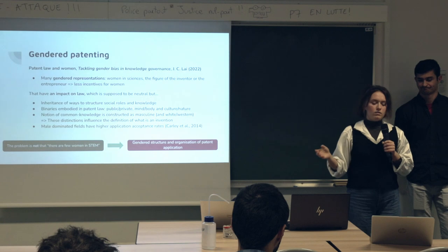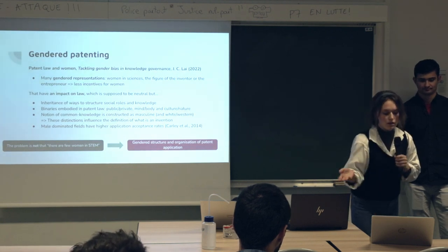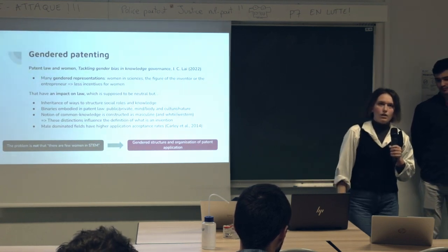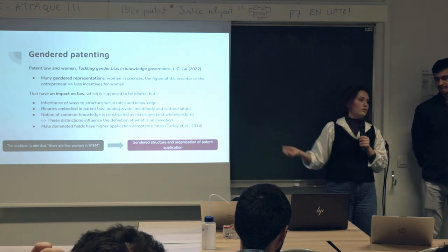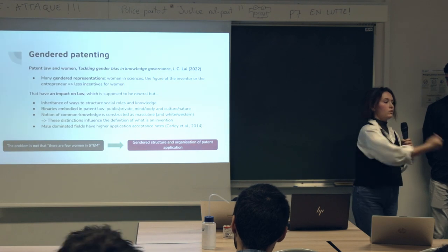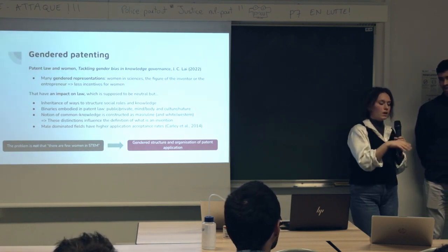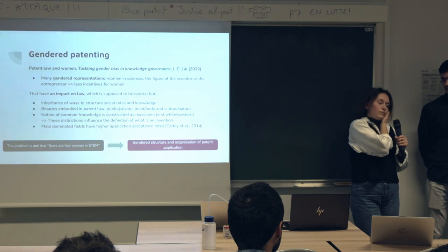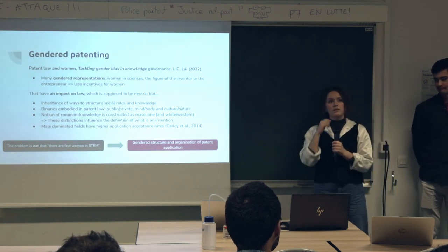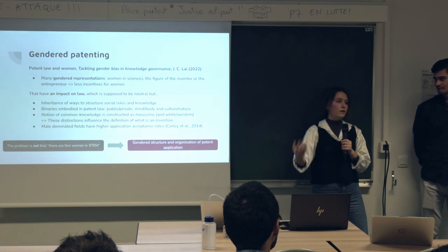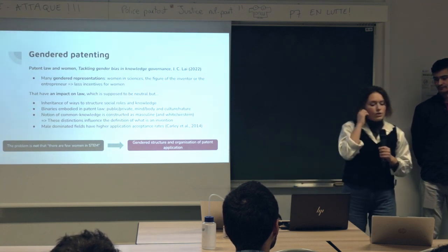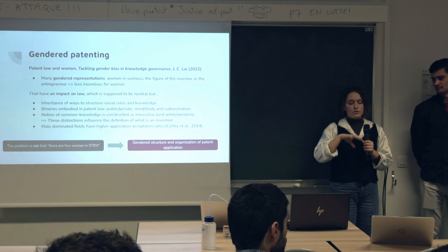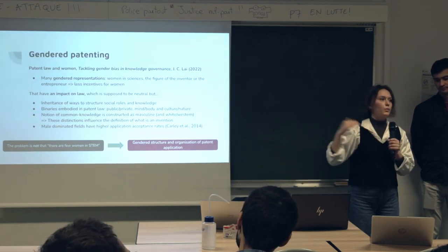This has an impact on what is seen as an invention. The book gives interesting examples, such as two different means of contraception — one that led to a patent and another that did not, because one was associated with industrial and commercial interest, while the other was associated with private practice since it was a nurse applying it. This shows that the two spheres are very different, and how a discipline is perceived impacts whether it can lead to patents.